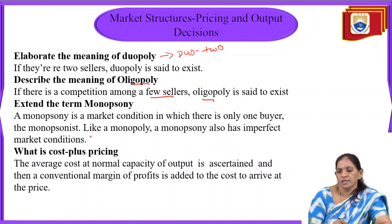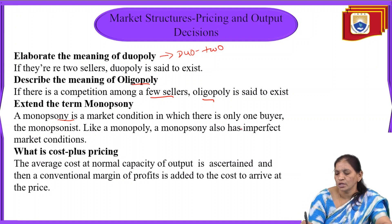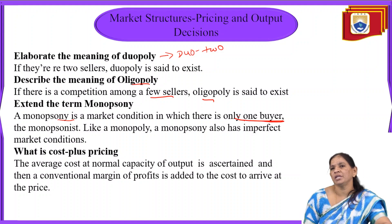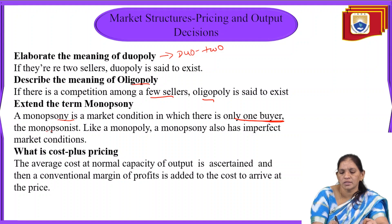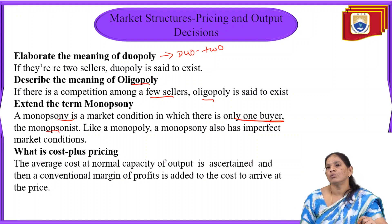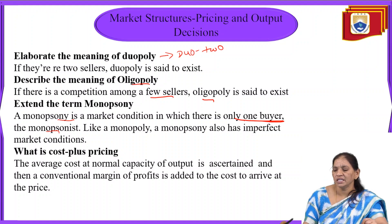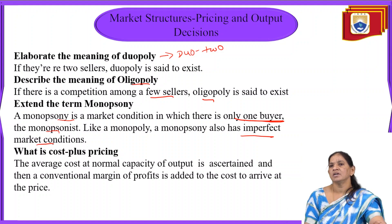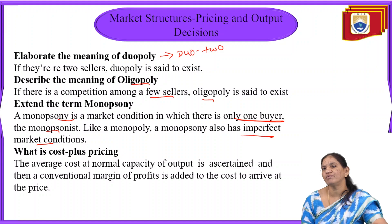Extend the term monopsony. Monopsony means a market condition or structure in which there exists only one buyer — many people produce the goods, but the person who purchases the goods will be only one. That is called a monopsonist. This type of market structure is called monopsony, and it occurs only in imperfect market conditions.